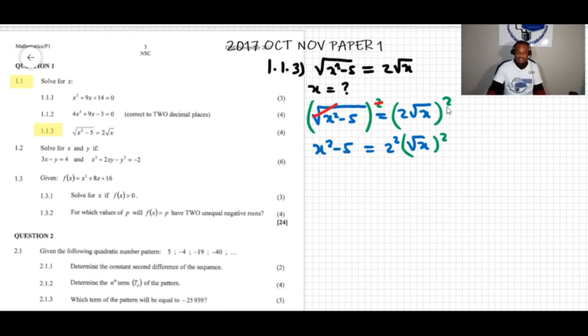The power of 2 over here is for the 2 and it's also for the square root of x. So this will be x squared minus 5 equals 4x, because here the root and the power of 2 cancel.